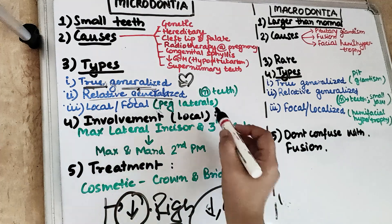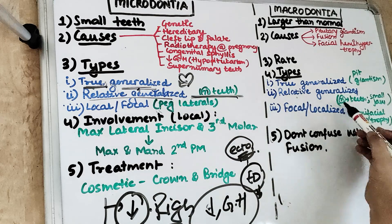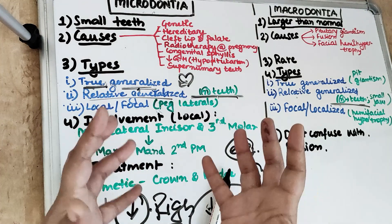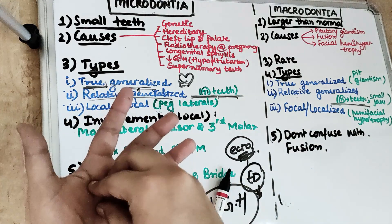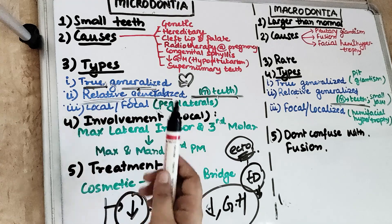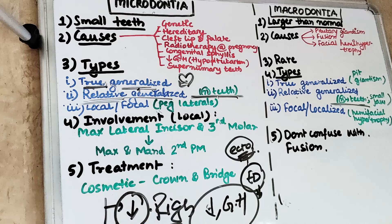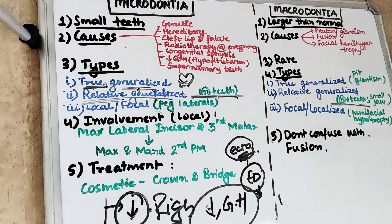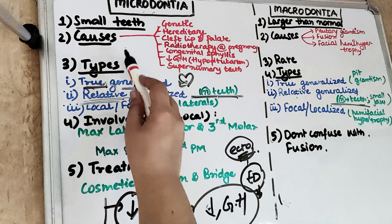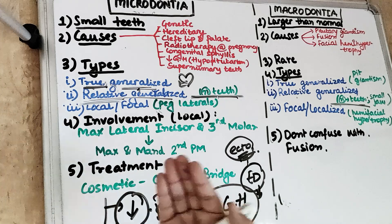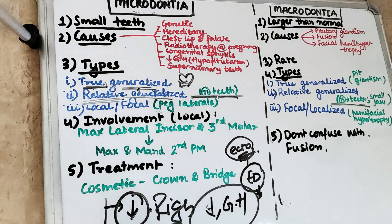Then comes relative generalized Microdontia. This is when the teeth are actually normal in size, but when the jaw is bigger — either maxillary or mandibular — there is spacing, so it feels like the teeth are smaller. That is not true; the term is 'relative' because we are talking relatively. Teeth placed in a large maxilla or large mandible give the illusion of microdontia. In relative microdontia, there will be spacing present between the teeth because the jaw is big and the teeth are sparsely placed.